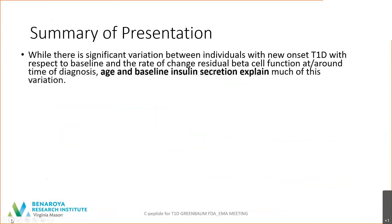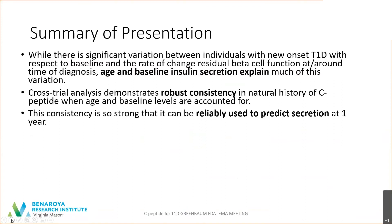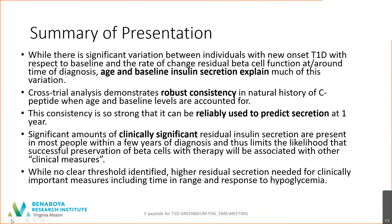To summarize: while there is significant variation between individuals with new-onset diabetes with respect to both baseline and the rate of change of residual beta cell function around the time of diagnosis, age and baseline secretion explain much of the variation. Cross-trial analysis demonstrates robust consistency in the natural history of C-peptide when these variables are accounted for — so strong it can be reliably used to predict secretion at one year. Clinically significant amounts of C-peptide are present in most people within a few years of diagnosis, limiting the likelihood that successful beta cell preservation with therapy will be robustly associated with other clinical measures. While no clear threshold is identified, higher residual secretion is needed for clinically important measures, including time in range and response to hypoglycemia.